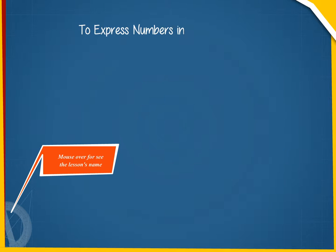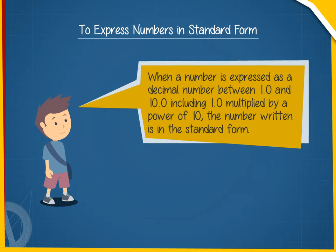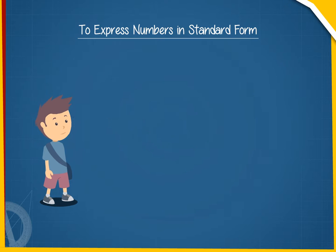To express numbers in standard form: when a number is expressed as a decimal number between 1.0 and 10.0 (including 1.0) multiplied by a power of 10, the number is written in standard form.